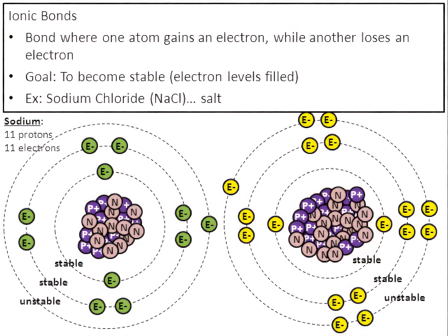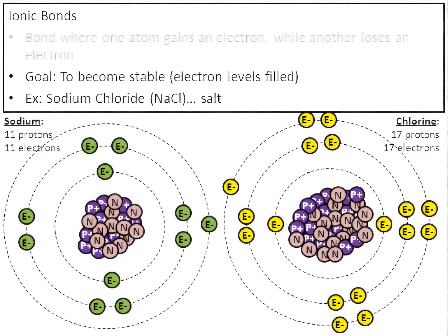Chlorine has 17 protons and 17 electrons. An ionic bond is where one atom gains an electron and another loses. Watch what chlorine does — chlorine is stealing an electron from sodium. That's going to completely change the amount of electrons each has. Sodium used to have 11 electrons but just lost one, so it only has 10. Chlorine used to have 17 electrons but just gained one, so it now has 18.